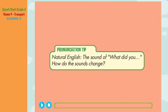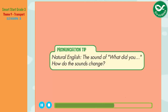Pronunciation Tip: In natural English, 'what did you' sounds like 'whatdidyou'. Listen. What did you see? What did you see? Now listen again and say. What did you see? What did you see? What did you see?